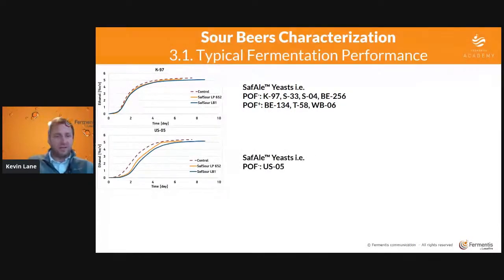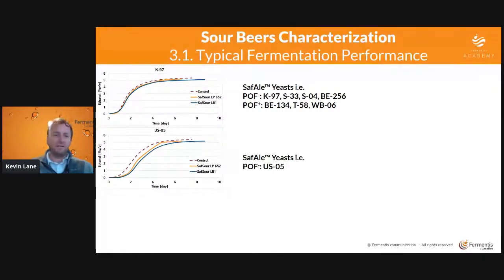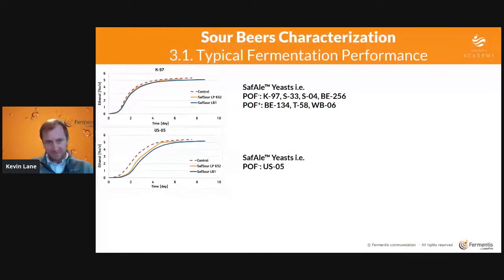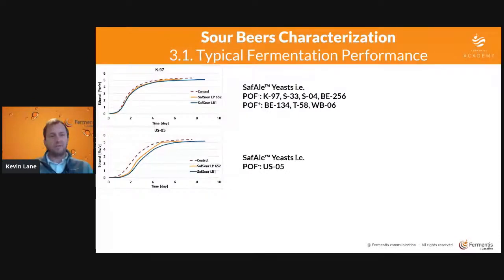The second group is just one strain — Safale US-05, our Chico ale yeast. This was significantly impacted by the presence of acid. You can see an extended lag phase and a slower achievement of the alcoholic fermentation. Mind you, all of these fermentations ended at nearly the same point — the acids present didn't really affect how much alcohol was produced, just the timing. Lag phase and rate of fermentation were delayed, which is where you see the gap between the fermentation curves.